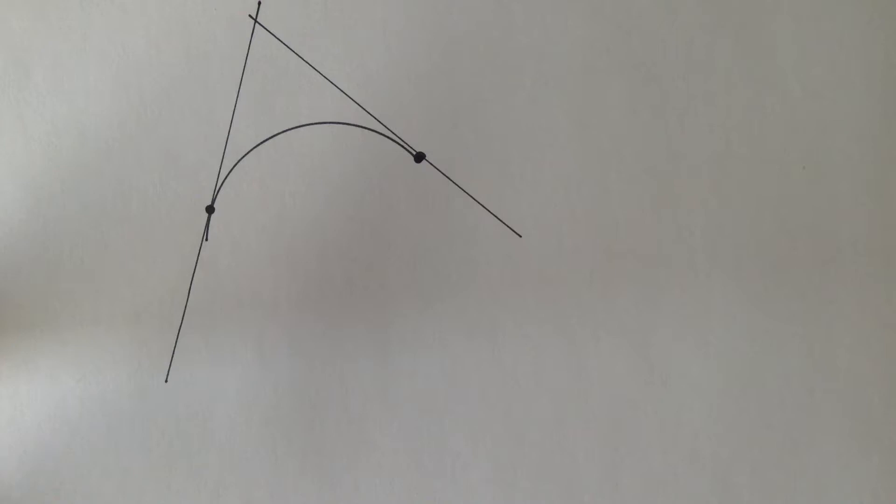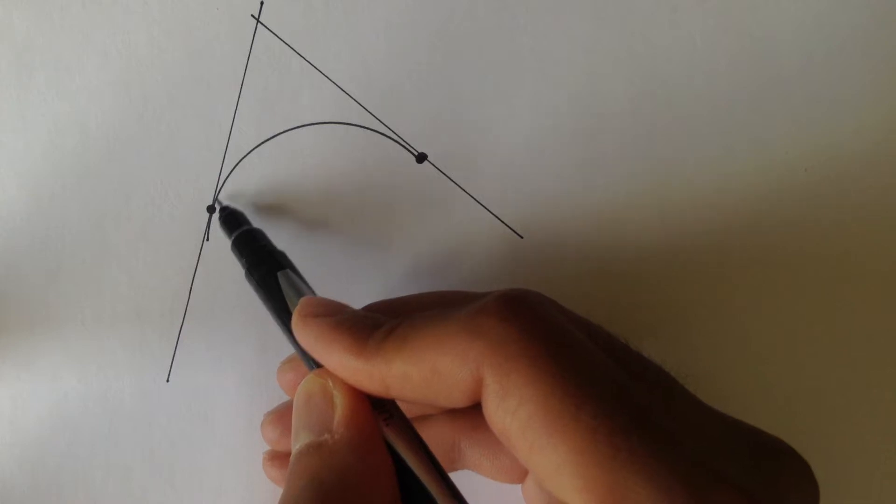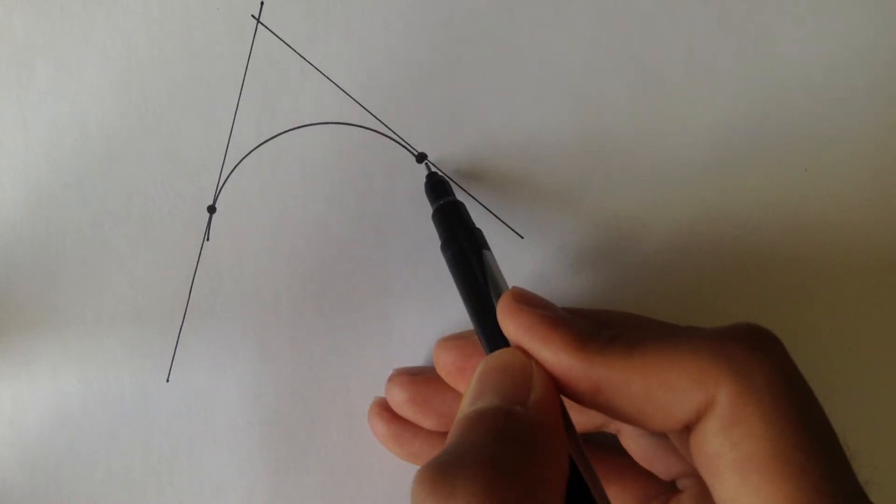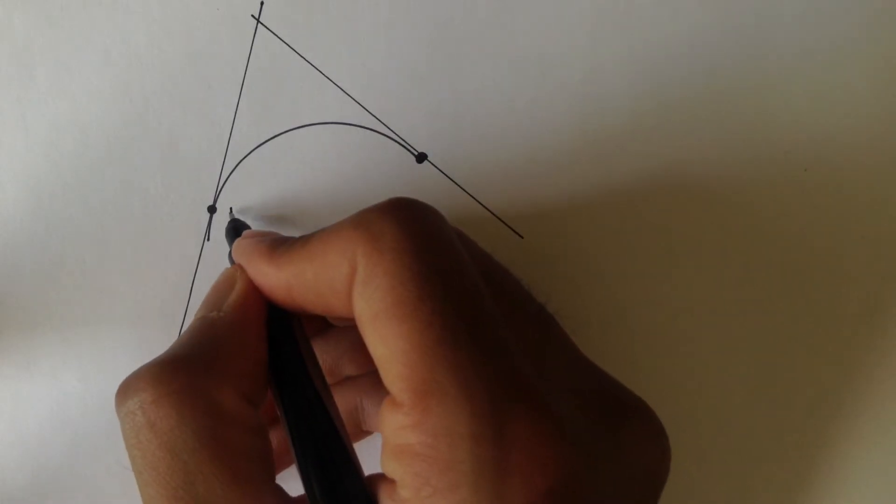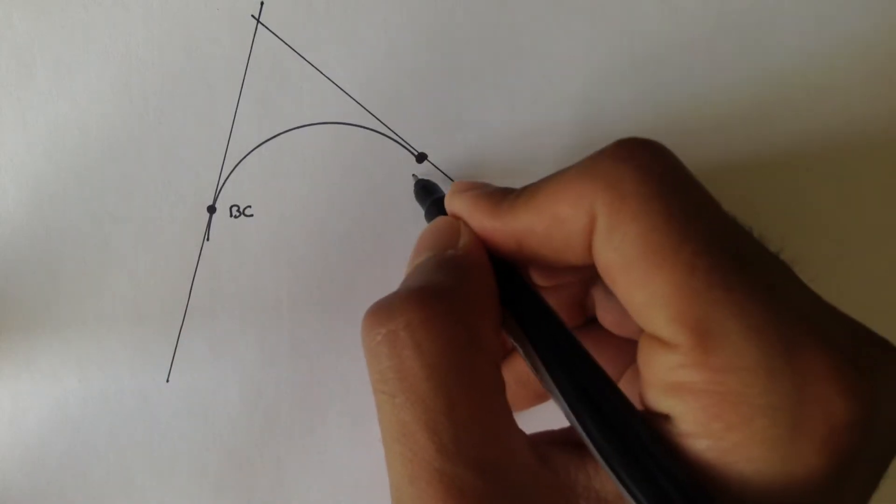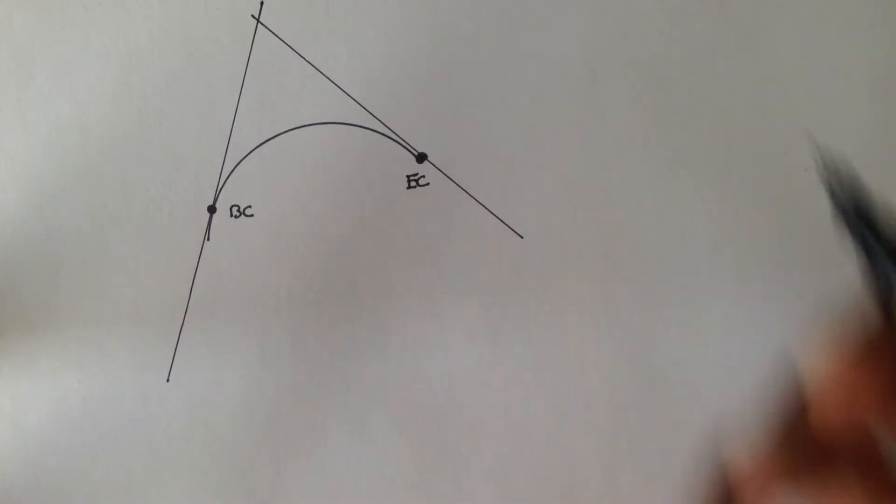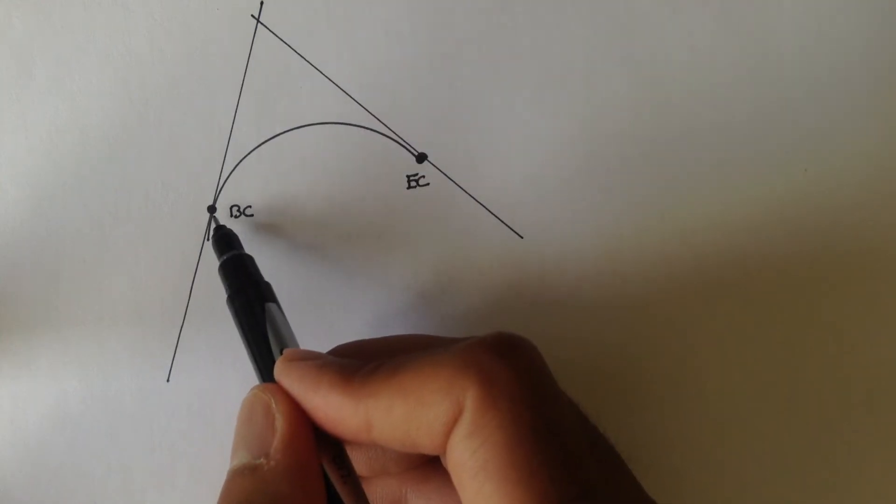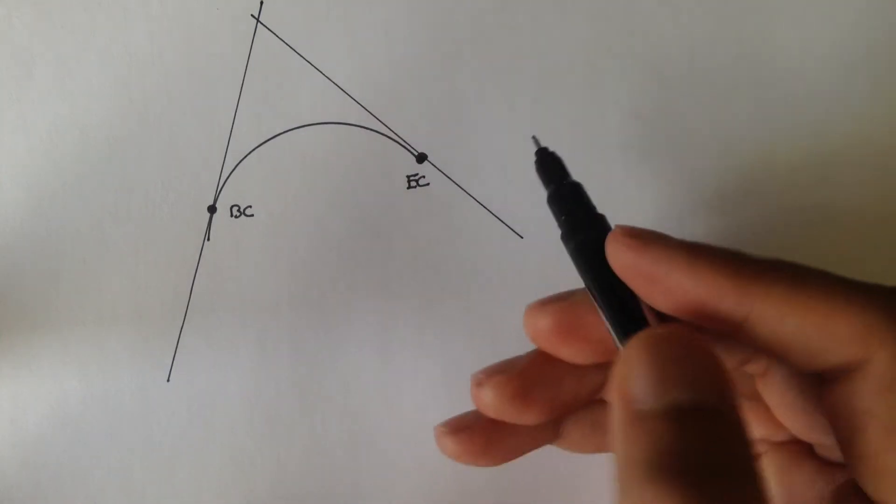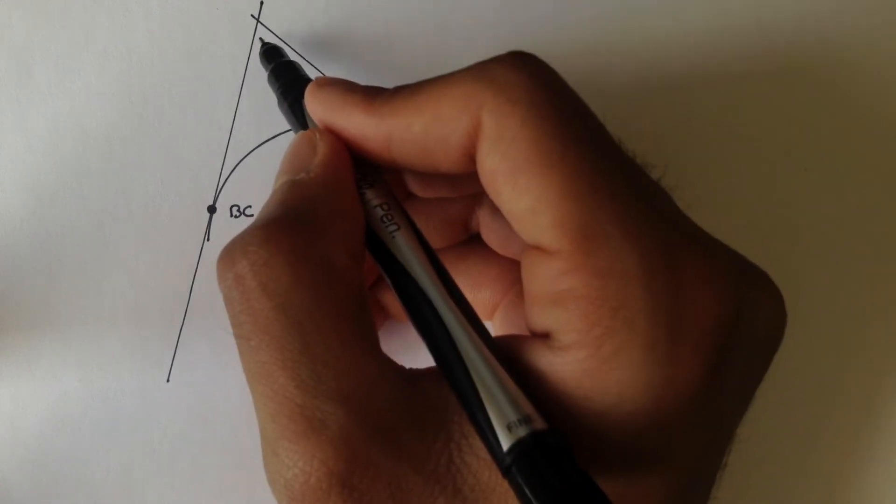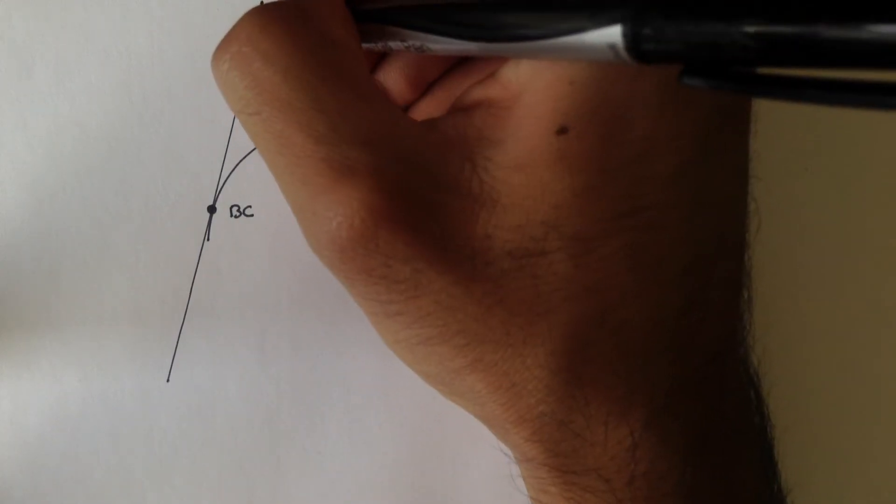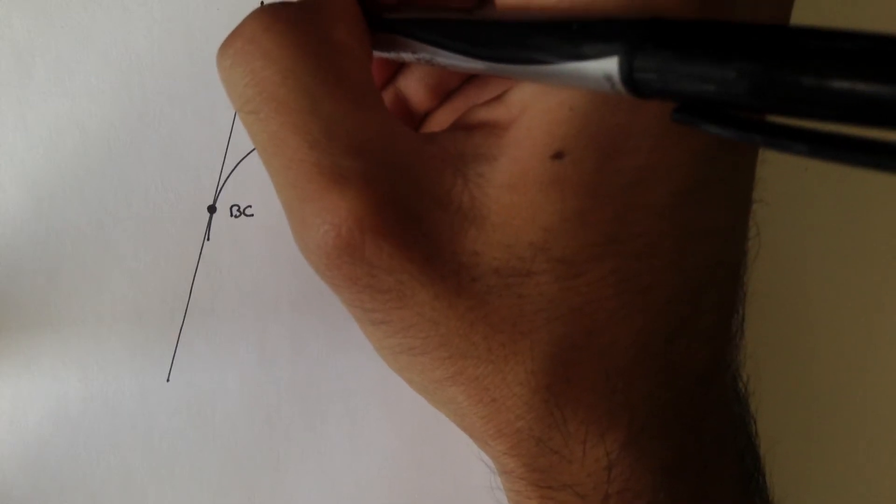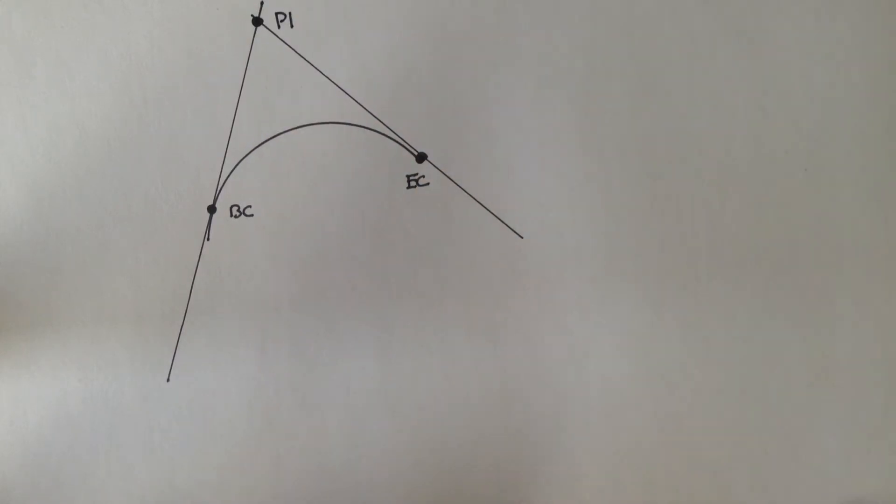So here I have a very simple horizontal curve drawn out already, and the curve starts here and goes around and ends here. So this is the BC, or the beginning of curve, and this is the EC, the ending of the curve. And the two lines that are drawn are the tangents to the BC and the EC. And remember, where they intersect, where these two tangent lines intersect, that's called the PI, or the point of intersection.